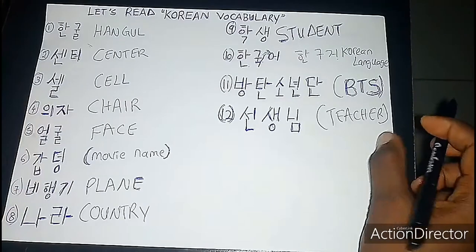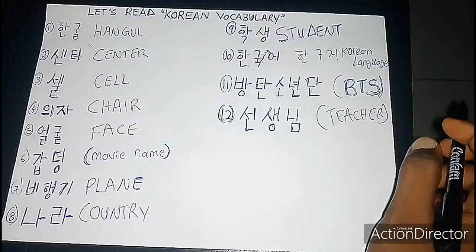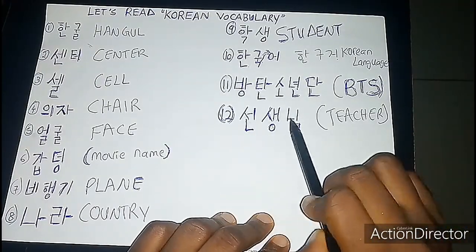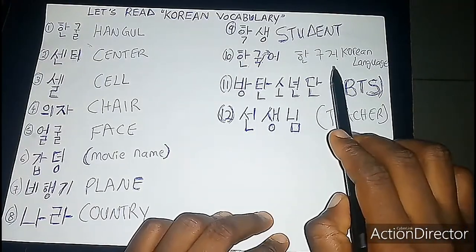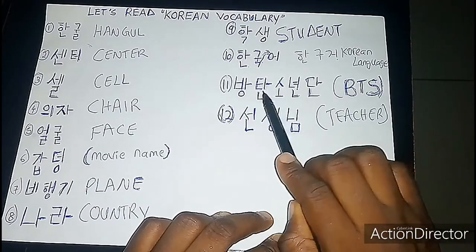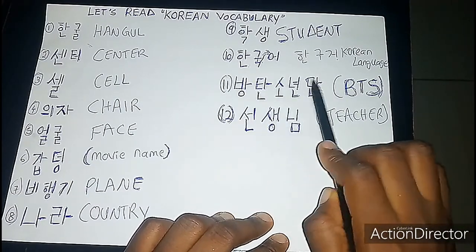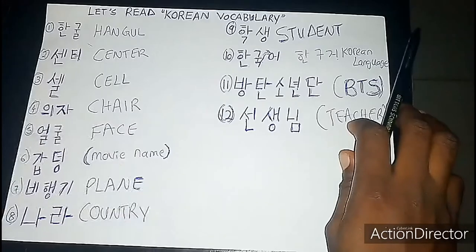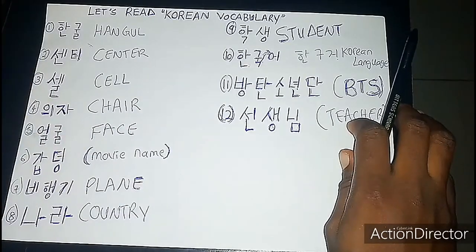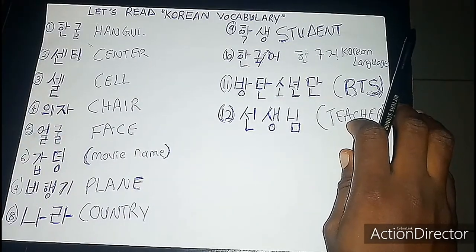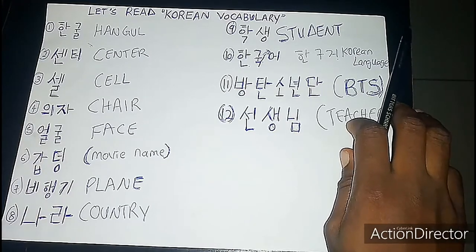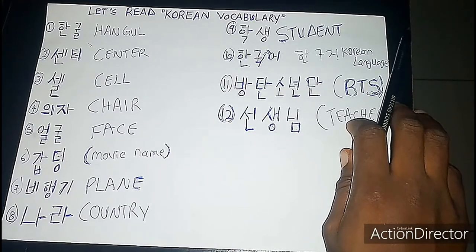If you want to know how many syllables are in a word, you simply count them. For example, seonsaengnim has three syllables, and Bangtan Sonyeondan has five syllables. Korean words and sentences can have one, two, three, or more syllables.